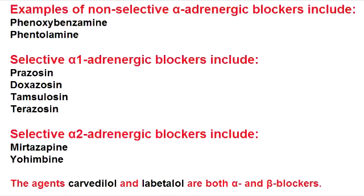What is the clinical use of phentolamine? Phentolamine is used when a patient has been on MAO inhibitors and then eats tyramine-containing foods. To prevent the hypertensive crisis in this situation, you give phentolamine.